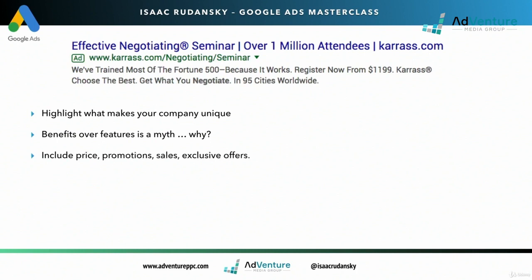Understand that most people searching Google are searching as an educated potential consumer. Include your price, promotion, sales, exclusive offers. All these concepts play into scarcity, urgency, social proof, reviews, how many clients you have, how many client reviews you have.